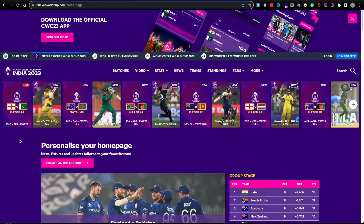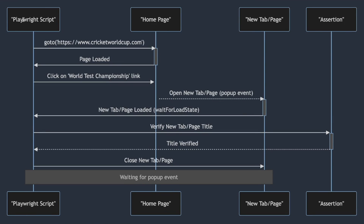This will be our overall flow. The key learning here is to understand how we can work with tabs and page management in Playwright. Let me show you a quick diagram of what the entire flow will look like. We're going to start off with our Playwright script, go to the Cricket World Cup site homepage, wait for the page to load, then click on the World Test Championship link which will open up a new tab.